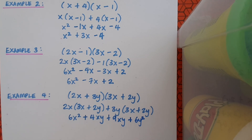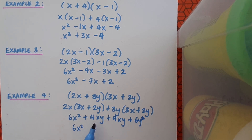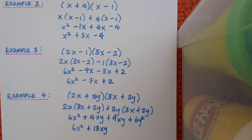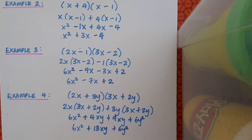Now I need to check if I can simplify using like terms. The 6x squared has no other term ending in x squared, so it stays by itself. The 4xy and the 9xy share the same variables, so I put those together as plus 13xy. Finally, 6y squared has no like term — nothing else ends in y squared — so I write plus 6y squared at the end. There's no more multiplication since all brackets are gone, and no like terms remain, so the question is finished.